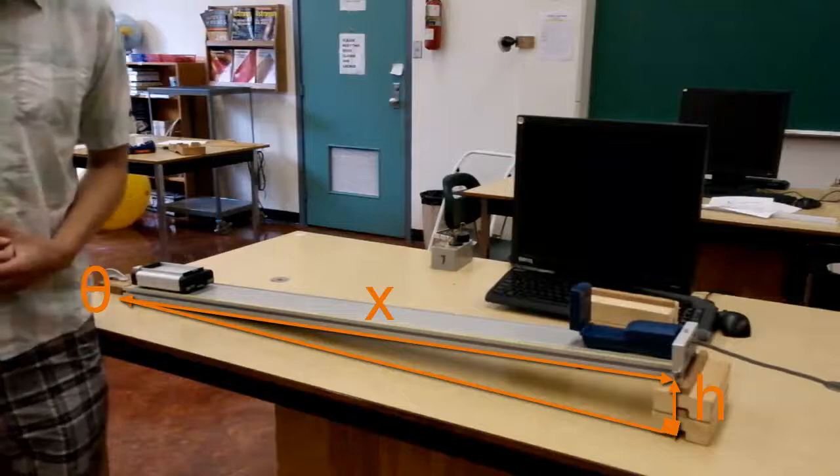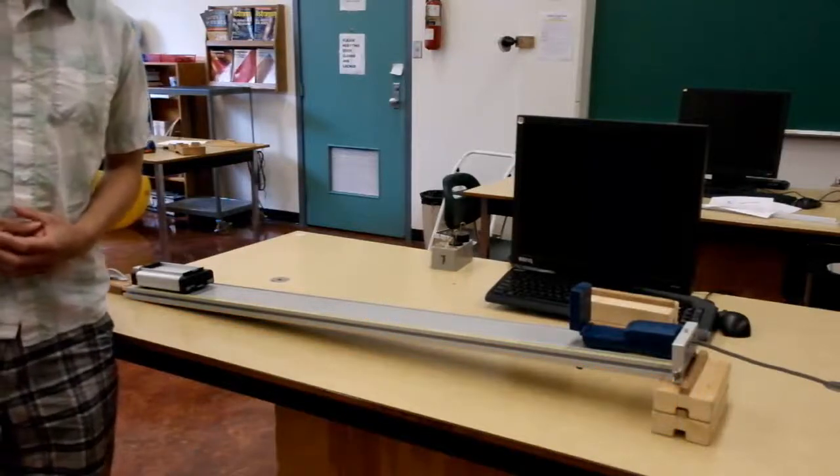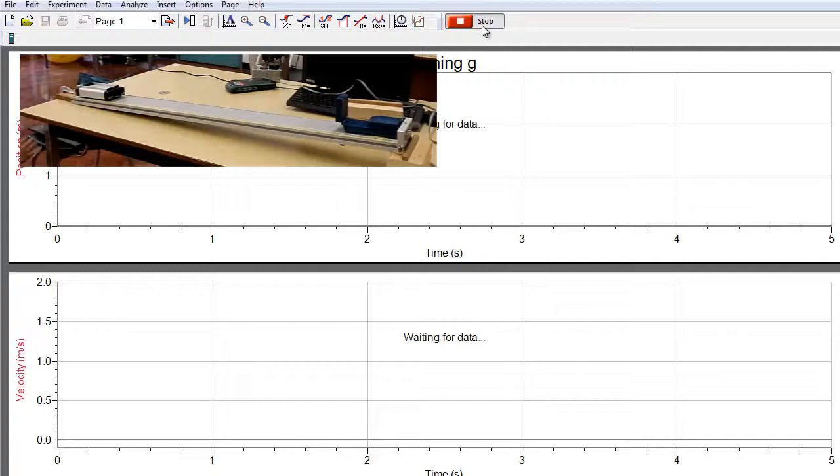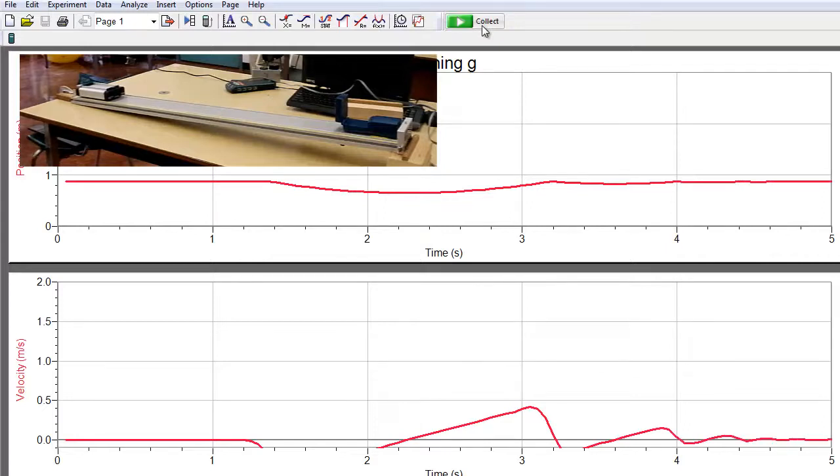So now let's switch over to LoggerPro and we'll see quickly what we have to do there. This is what you'll see after you open the correct file in LoggerPro. We hit collect. Once we start to hit collect, we'll give the cart a gentle little push. Make sure not to get too close to the motion detector.